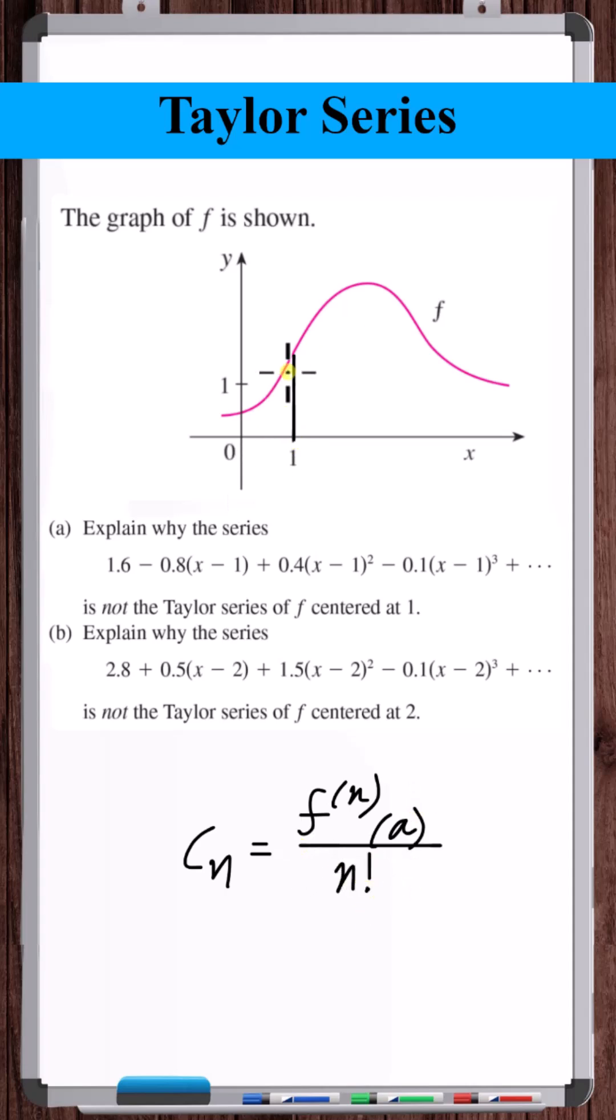Well, at 1, the derivative of f we can see is positive, but the coefficient on the n equals 1 term is negative. We know this is the n equals 1 term because this is to the first power. So this can't be the Taylor series of f.